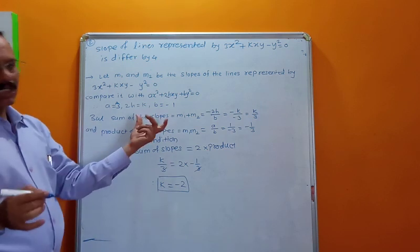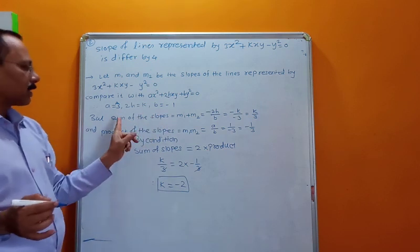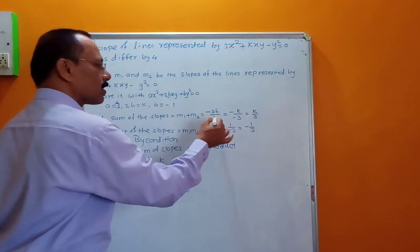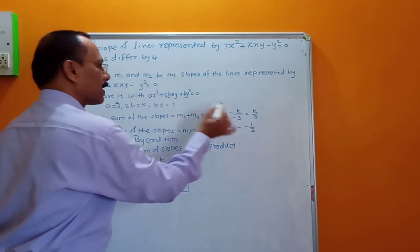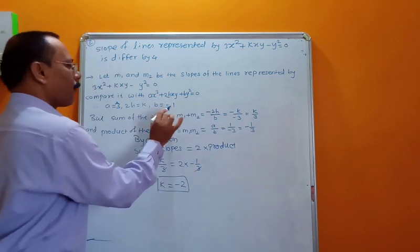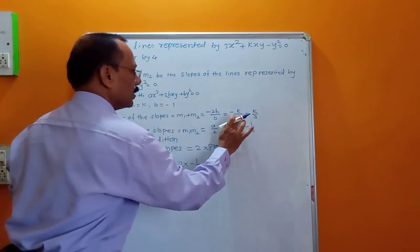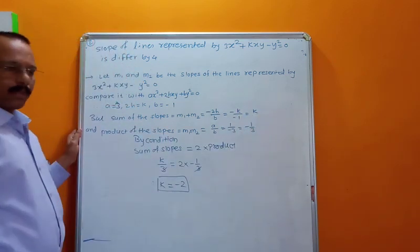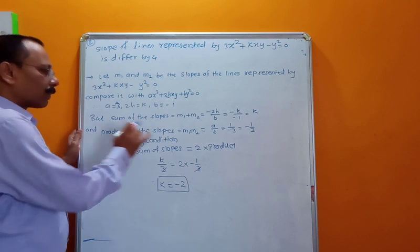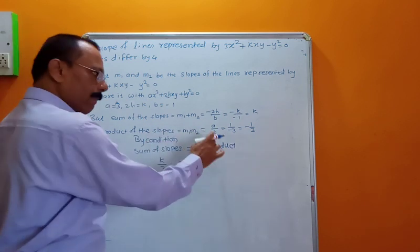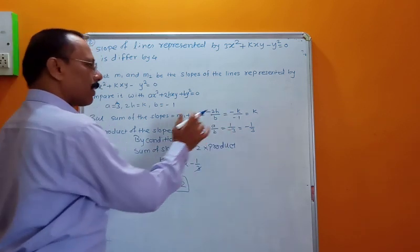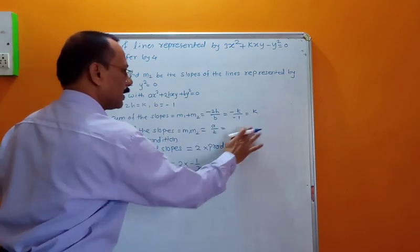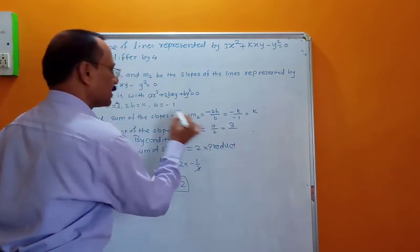Sum of slopes: m1 + m2 = −2h/b = k (since b = −1, the negatives cancel to give +k). Product of slopes: m1·m2 = a/b = 3/(−1) = −3.